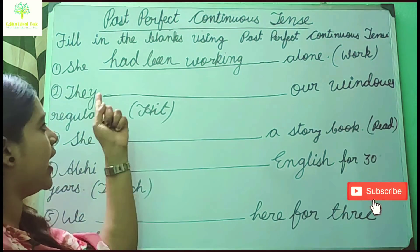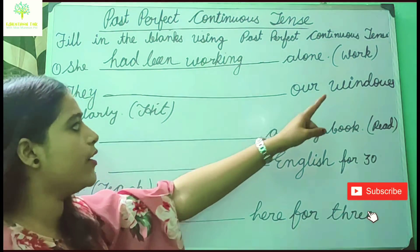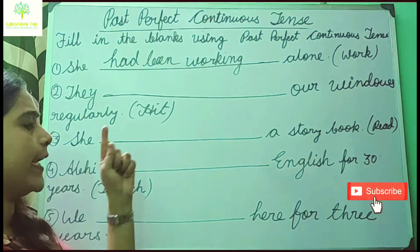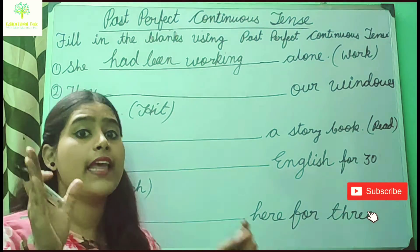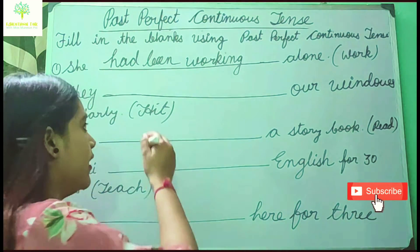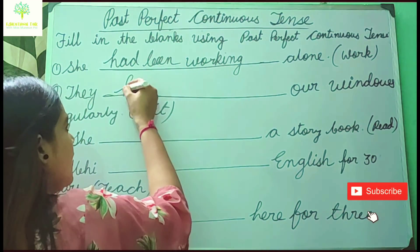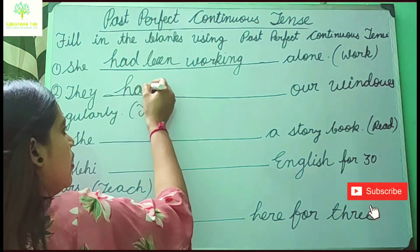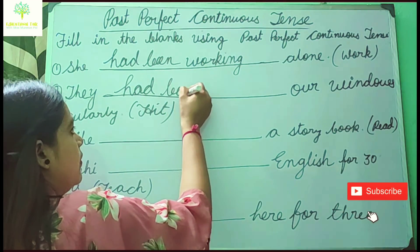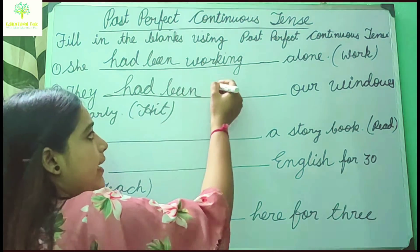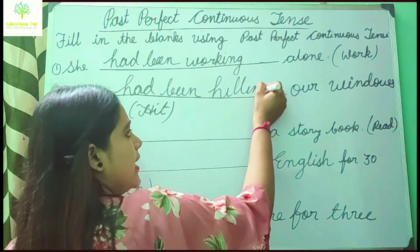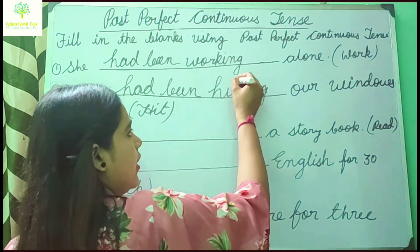Next: 'They ___ our windows regularly.' Applying the rule — they had been hitting our windows regularly. Note that 'hit' doubles the final consonant before adding -ing, so it becomes 'hitting.'